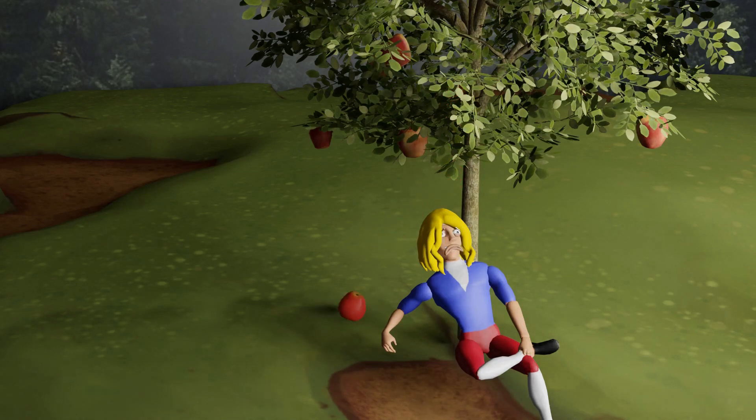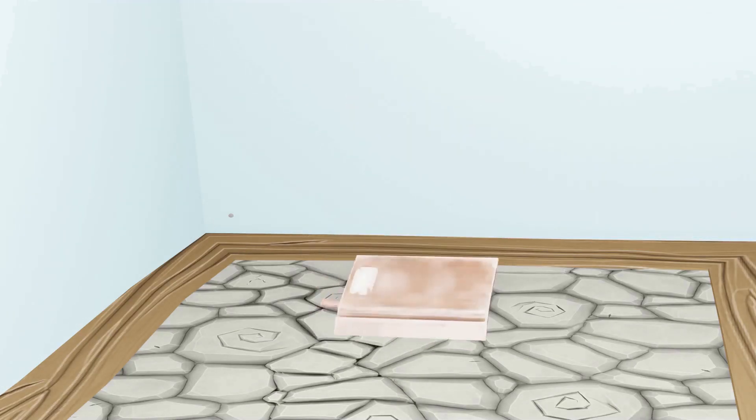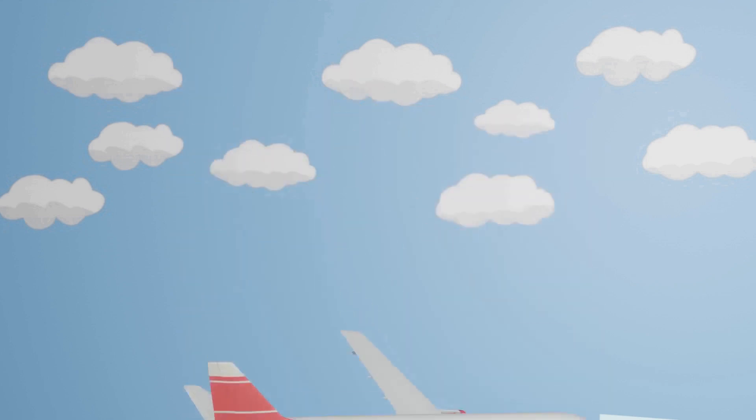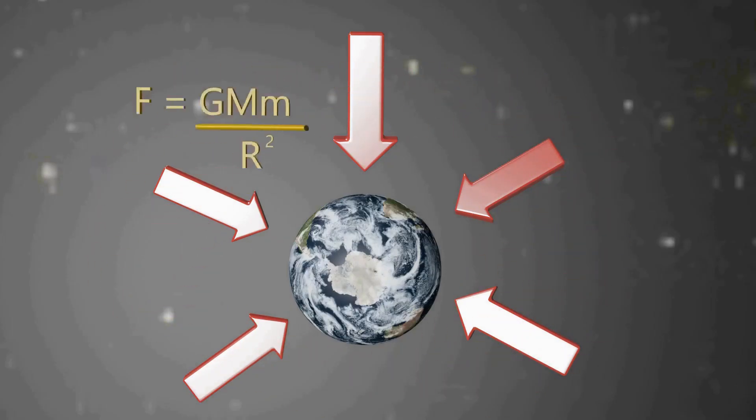Have you ever wondered why an apple fell on Newton? A book falls on the ground? An airplane if crashed falls on the ground? Well, everything is because of the gravitational force of Earth.